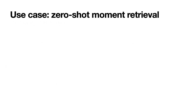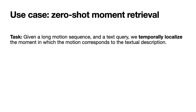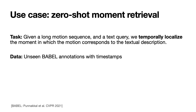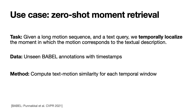Now let's look at the use case of our model on zero-shot moment retrieval. Given a long motion sequence and a text query, the goal is to localize the time interval where the motion matches the text. We use the unseen Babel annotations with timestamps, and compute text-motion similarity for each temporal window in a sliding window manner.